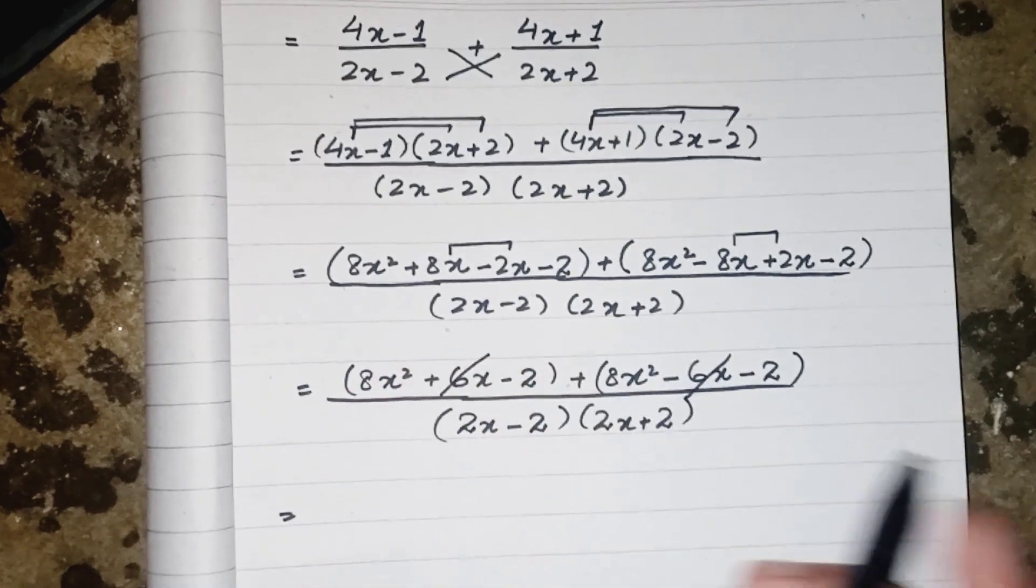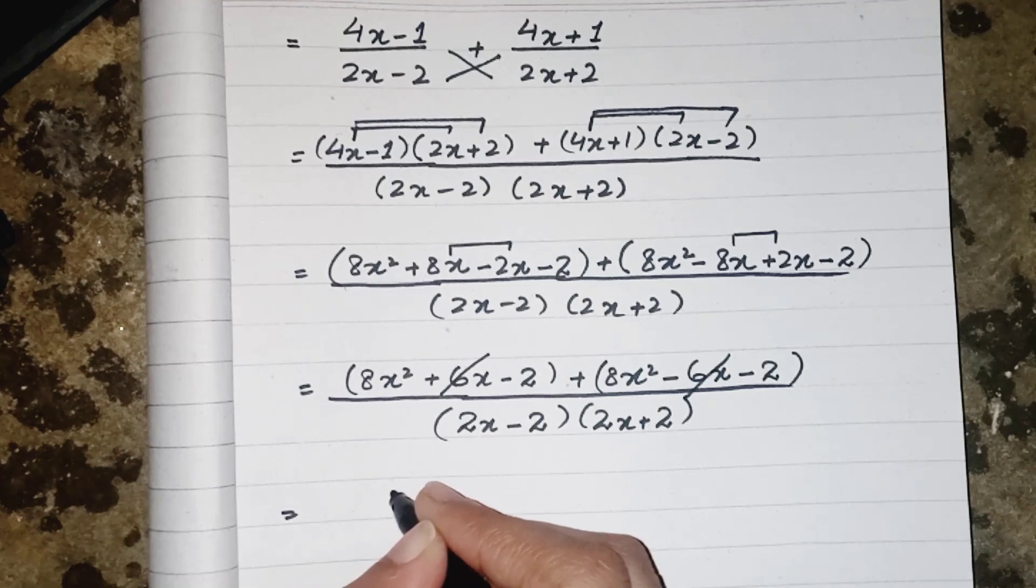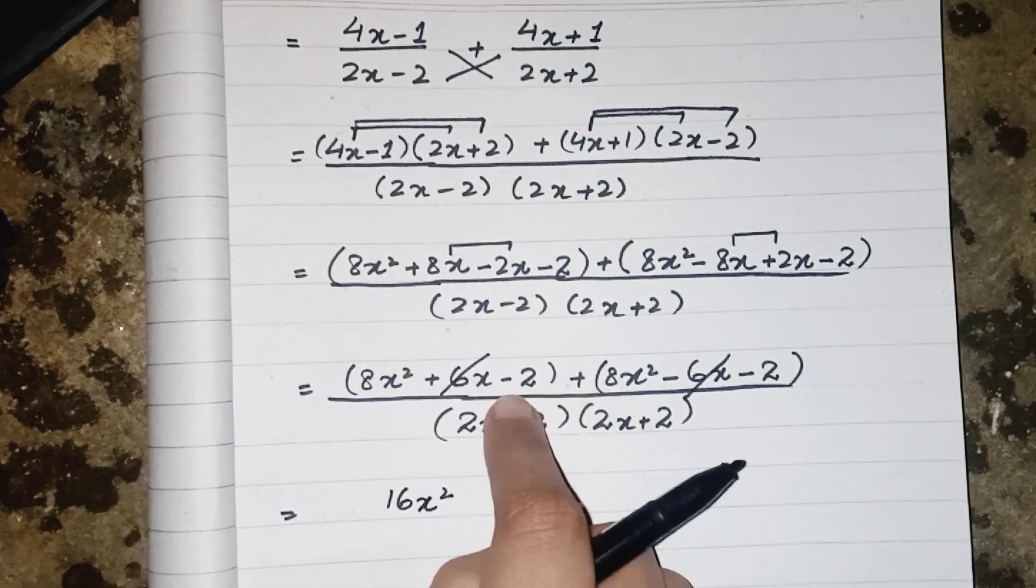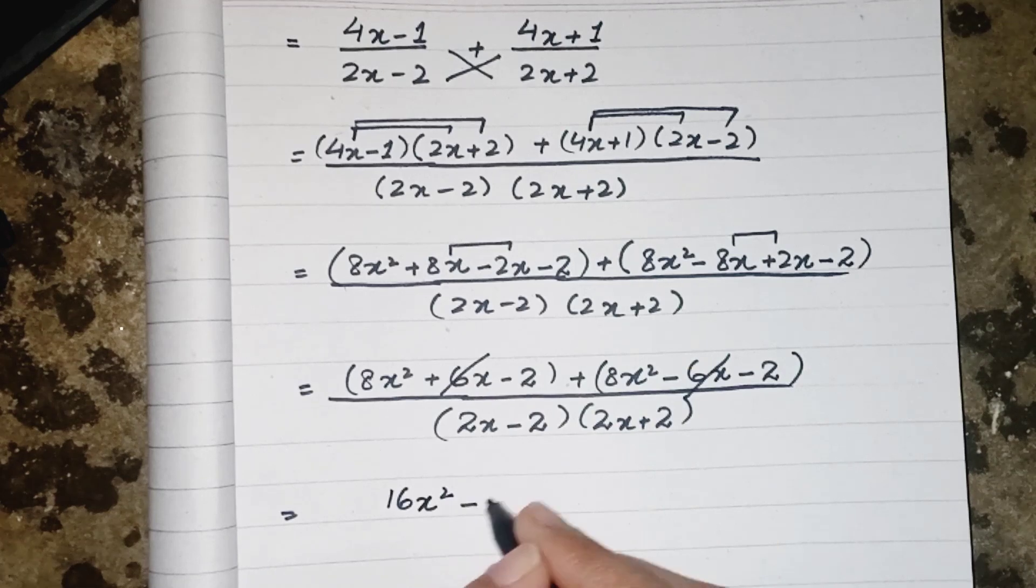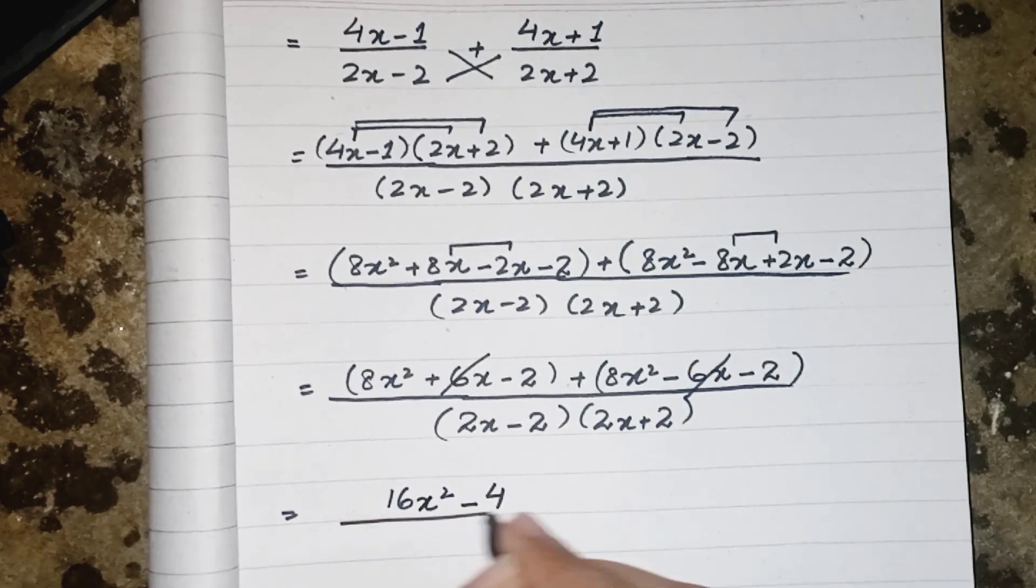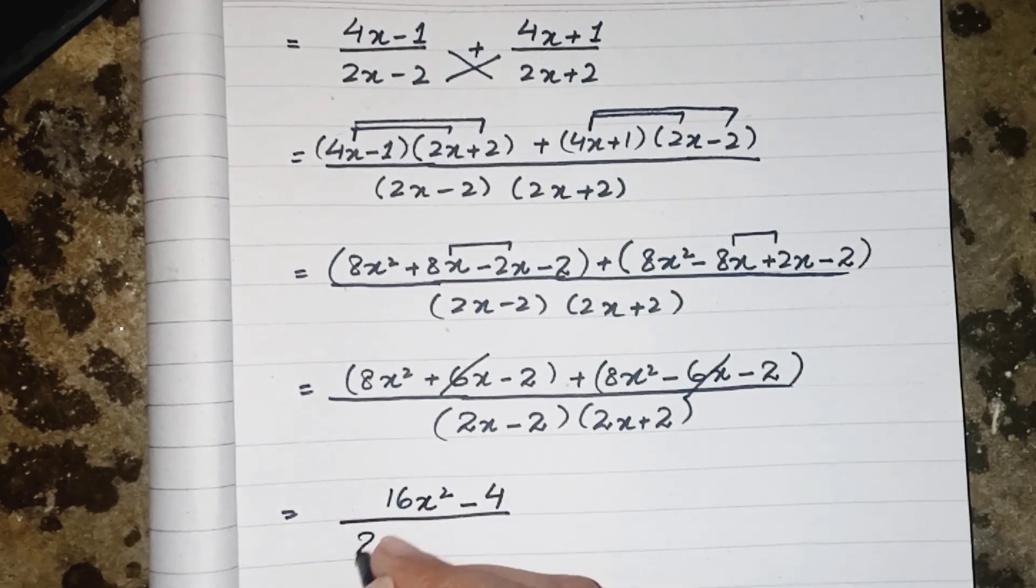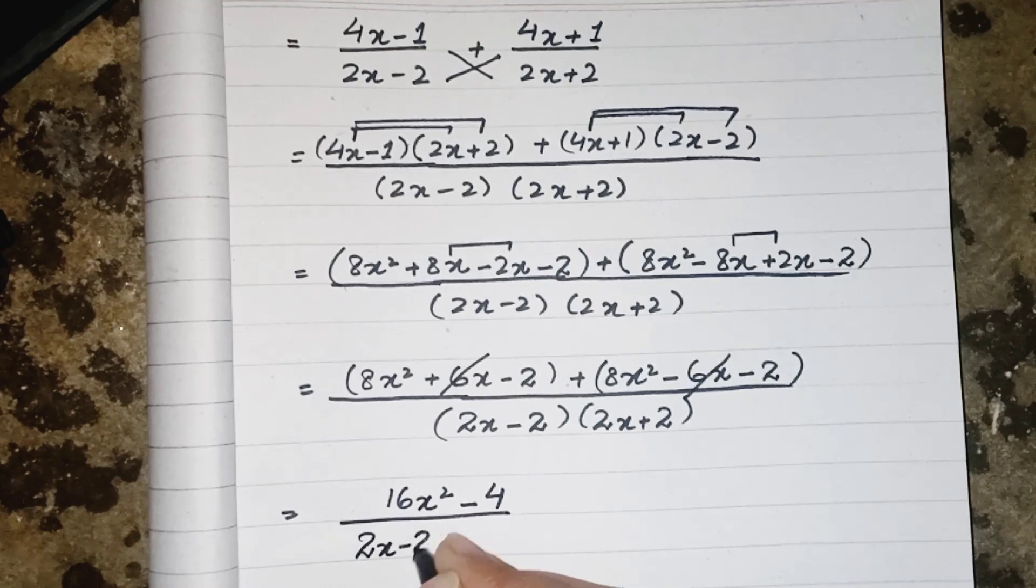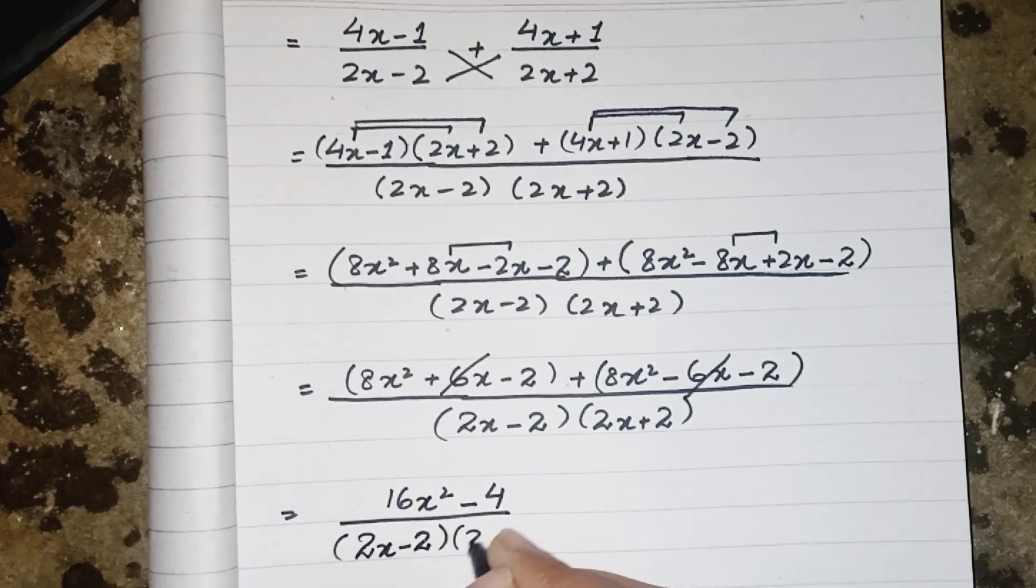8x squared plus 8x squared will give us 16x squared. Minus 2 and minus 2 will give us minus 4. While in the denominator we have 2x minus 2, 2x plus 2.